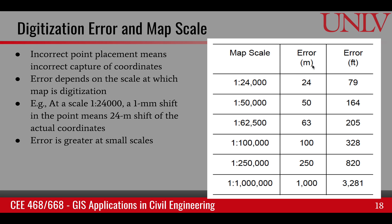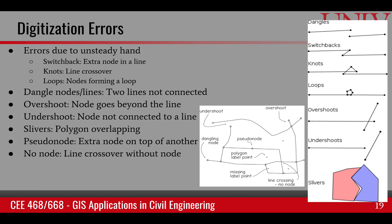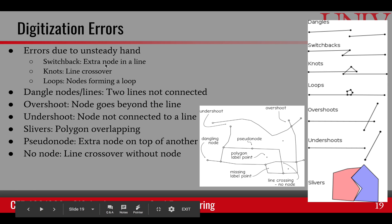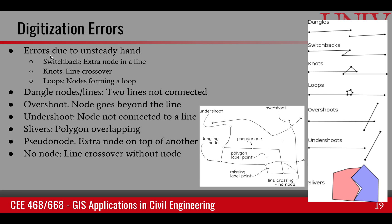There are several types of digitization errors. The first is caused by unsteady hands — when your arm gets tired or you look away, a switchback can happen where you intend to go forward but pick a point slightly backward. This is an easy correction — you just shift or remove that node.